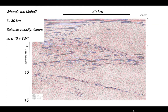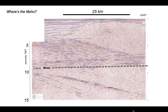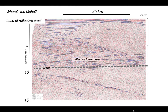At 6 km/s, 30 kilometers down equates to 10 seconds two-way time. Looking in that area, we can see the base of all that sub-horizontal reflectivity is just a little bit above 10 seconds, so I'm going to pick the Moho through here — in other words, the crust is slightly thinner than 30 kilometers. I've picked the Moho here where the seismic character changes: above the Moho we have all those reflectors, below we have very few. So the Moho is picked at the base of the reflective lower crust.